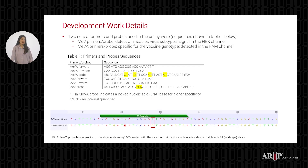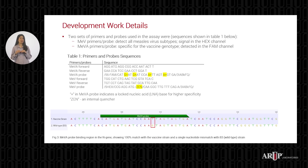This image shows the binding region of the MEVA probe within the N gene of vaccine and B3 strains. The probe has 100% match with the vaccine strain, whereas it has a single nucleotide mismatch in the boxed region — a T in vaccine versus G in the wild-type strain. We'll see how this mismatch correlates to one of the challenges we encountered during development in our next slide.